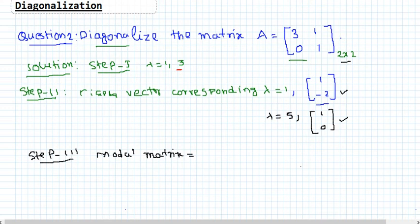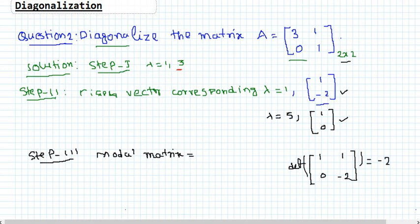First check the determinant of the matrix formed by the two eigenvectors: [1, 0; 1, -2]. The determinant is (1)(-2) - (0)(1) = -2, which is nonzero. So these two vectors are linearly independent. Since the determinant is nonzero, we can form a modal matrix P.